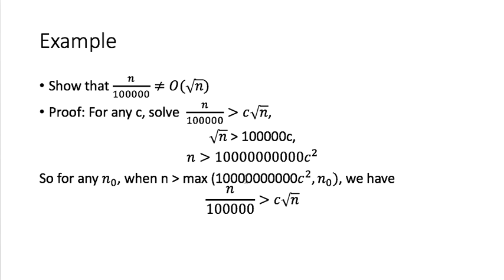When I pick this n, I also make it greater than that large constant. Then I will have n/100,000 greater than c times √n. This proof shows that no matter what c and no matter what n₀ you give me, I can always find n greater than n₀ such that n/100,000 is still greater than c times √n. That proves n/100,000 is not O of square root of n.